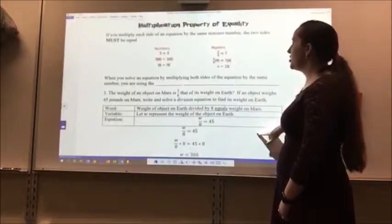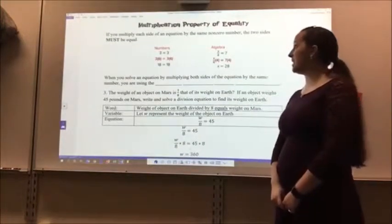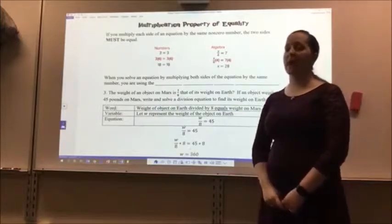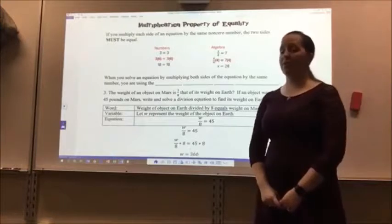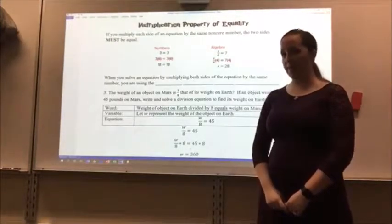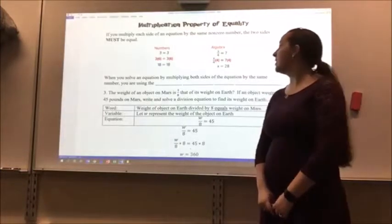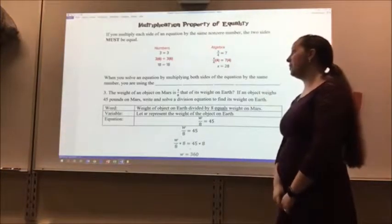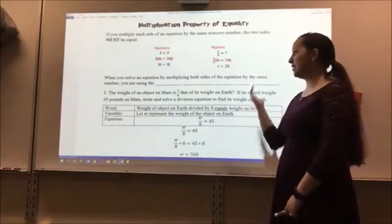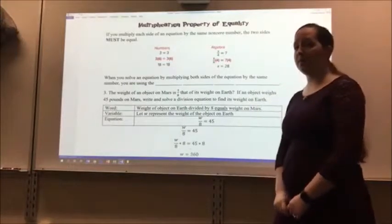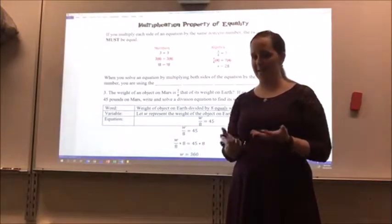The multiplication property of equality. If you multiply each side of the equation by the same non-zero number, the two sides must be equal. In numbers, if I multiply 3 by 6 on each side of my equation, I would get 18. So 18 equals 18. In algebra, if I multiply both sides by 4 in this instance, I'm getting x equals 28.